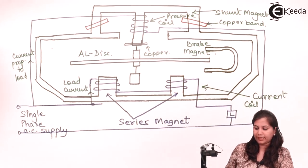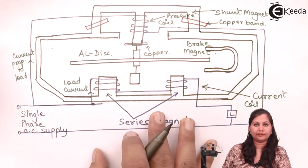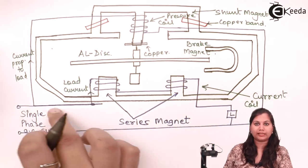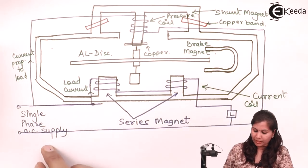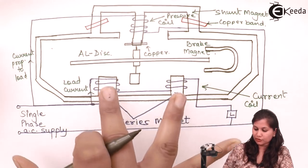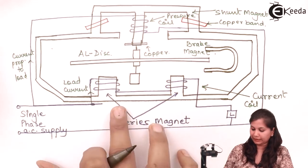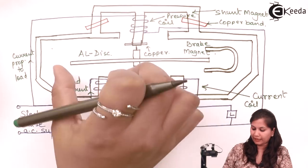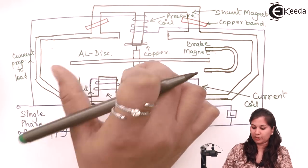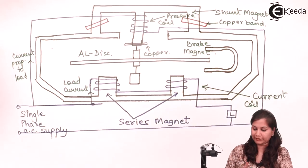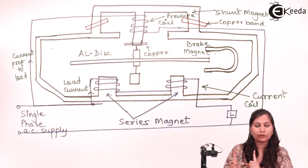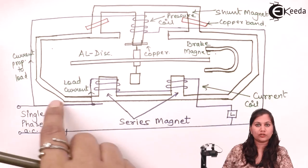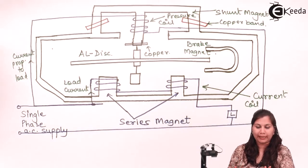This is the diagram for the single-phase induction type energy meter, with a single-phase AC supply. It consists of two electromagnets — one is the shunt magnet and the other is the series magnet. In between these two magnets is the aluminum disc, which rotates in the magnetic field. The speed of rotation of this disc is proportional to the power consumed by the appliance.